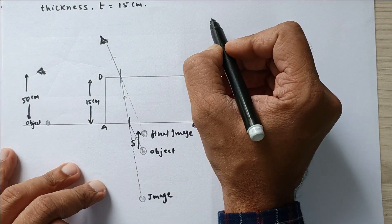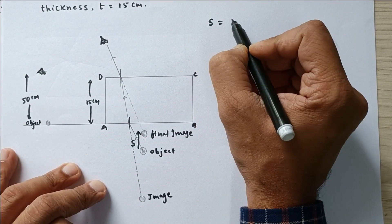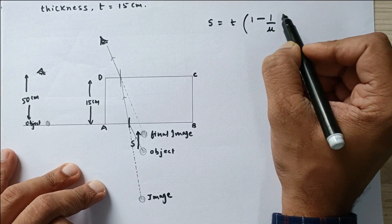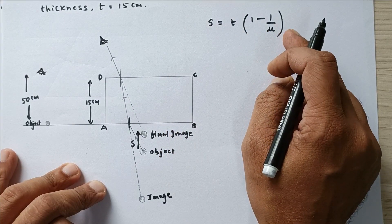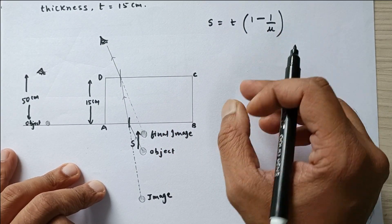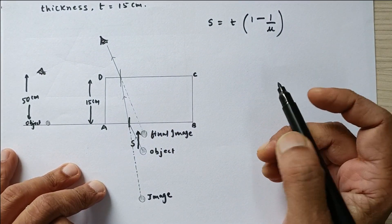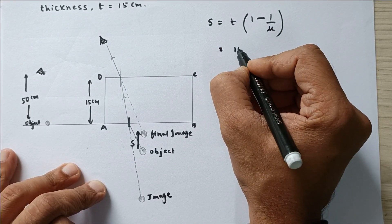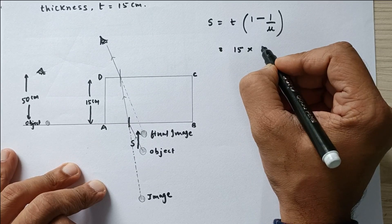Now this shift S can be written as the thickness of the glass slab times 1 minus 1 upon refractive index. If you do not understand how this expression actually came, please see the video, the link is given in the description. So I am going to substitute the value of thickness as 15 centimeters.